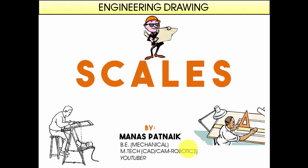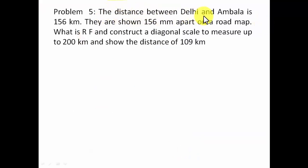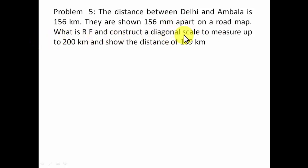Hi there guys, this is your friend and tutor Manas, and today we're going to be continuing with our discussion on diagonal scale — problem number three in this series. The problem: the distance between Delhi and Ambala is 156 kilometers, shown 156 millimeters apart on a roadmap. What is the RF, and construct a diagonal scale to measure up to 200 kilometers and show the distance of 109 kilometers.